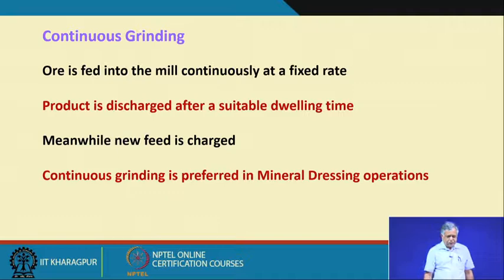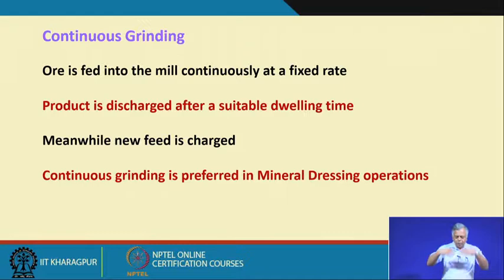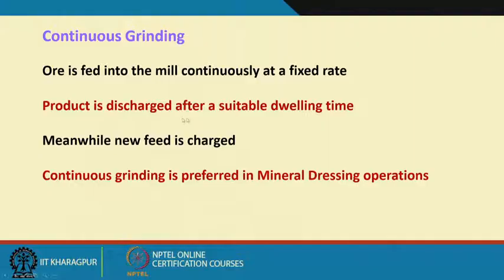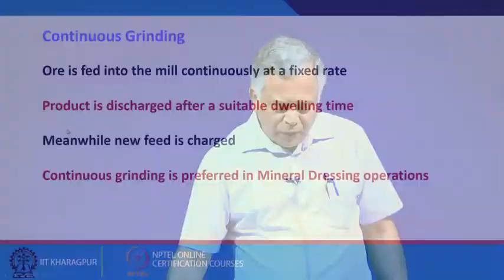In continuous grinding, ore is fed into the tumbling mill continuously at a fixed rate and discharged at a particular rate. You can calculate the retention time based on the mill volume and feed/discharge rates through mass balancing. The product is discharged after a suitable dwelling time, which is controlled by adjusting the feed and discharge rate. Harder material requires more retention time, and based on ore characteristics you decide the required dwelling time.